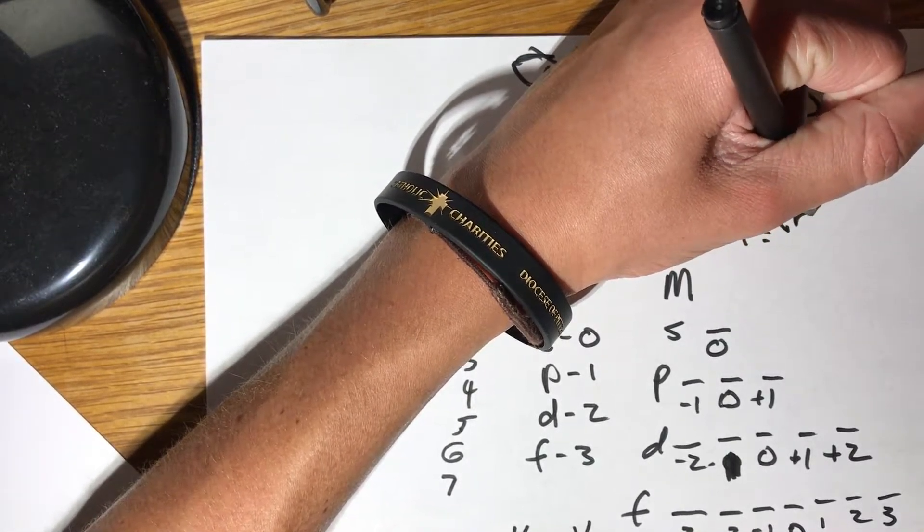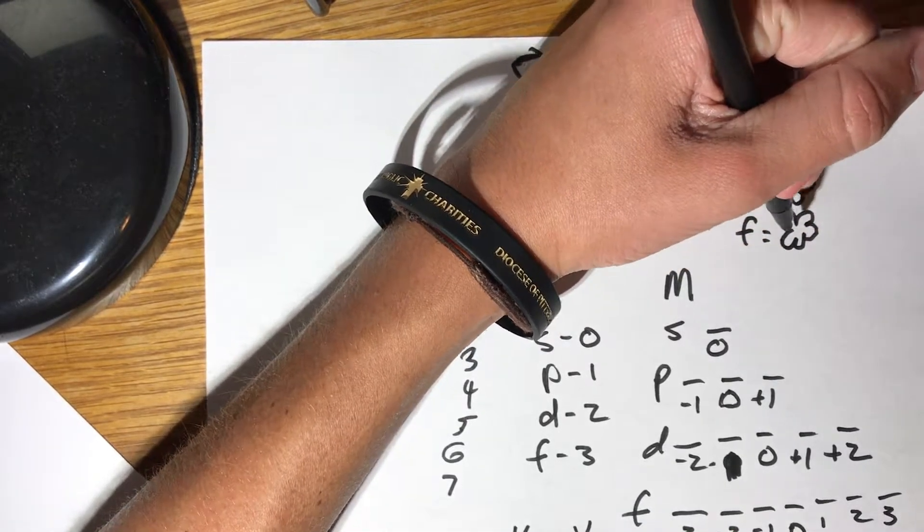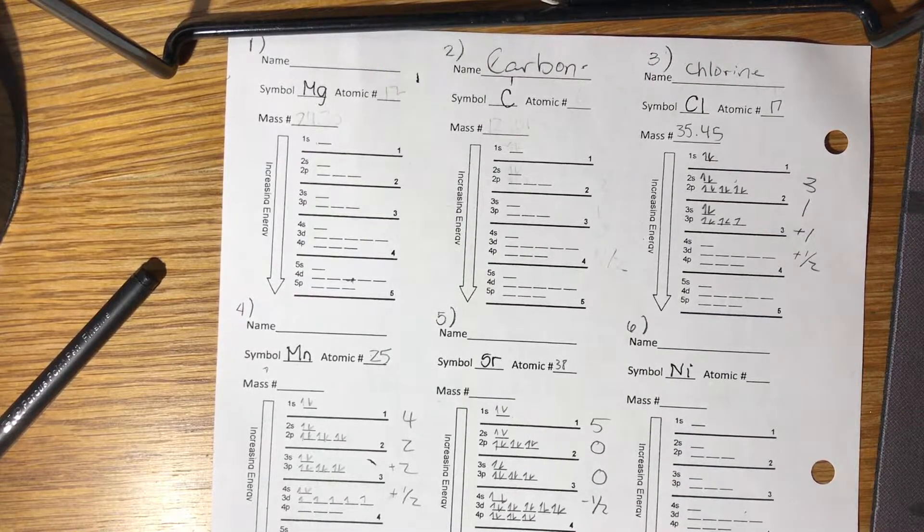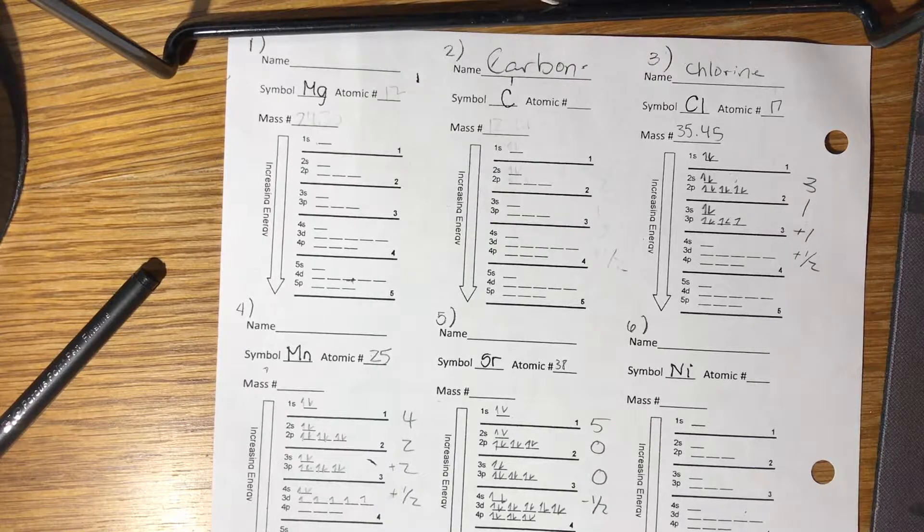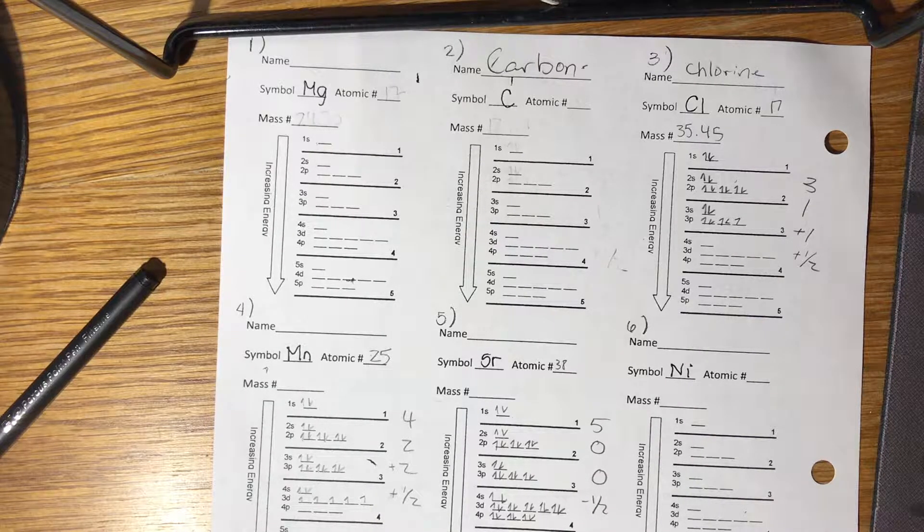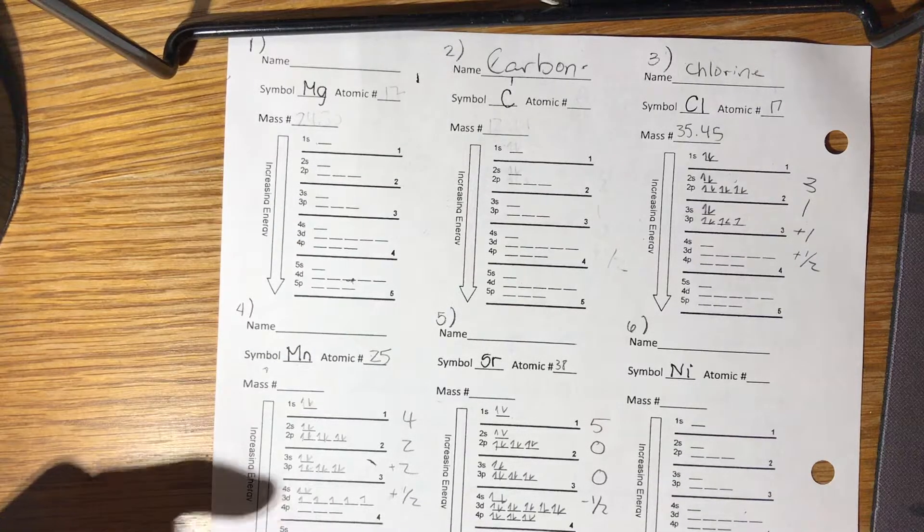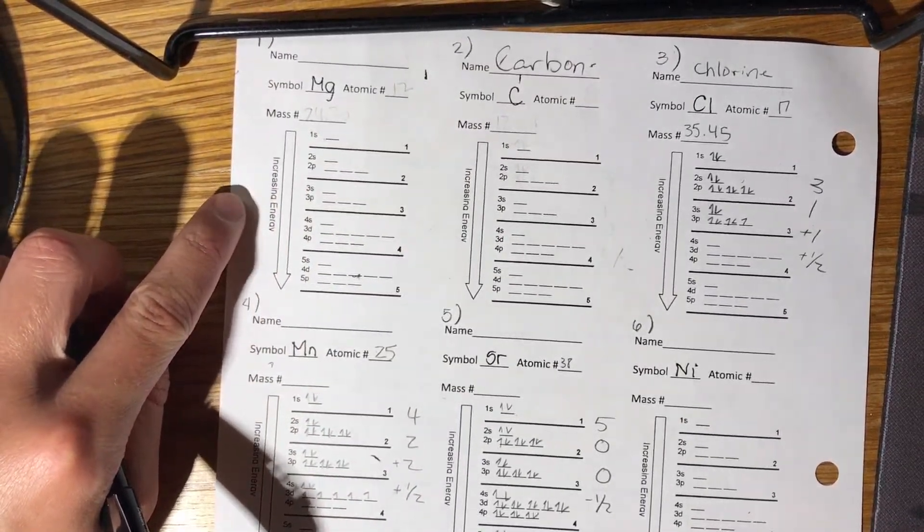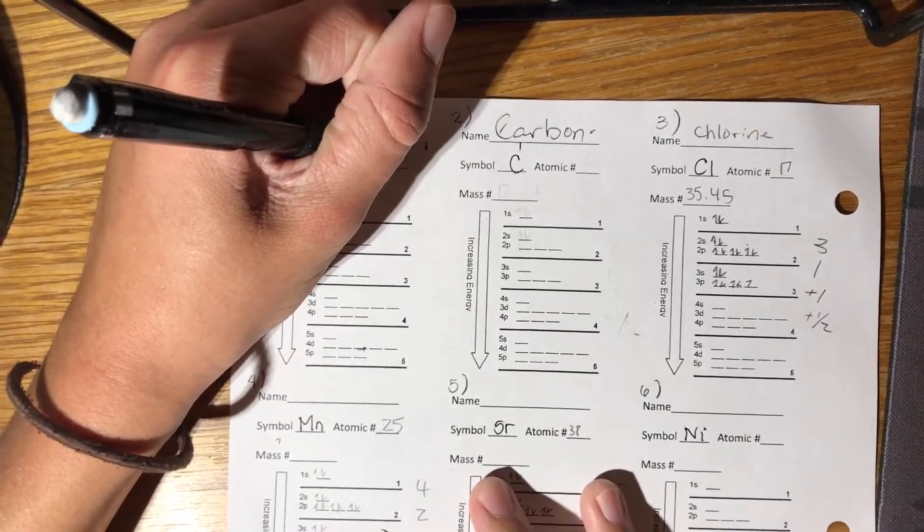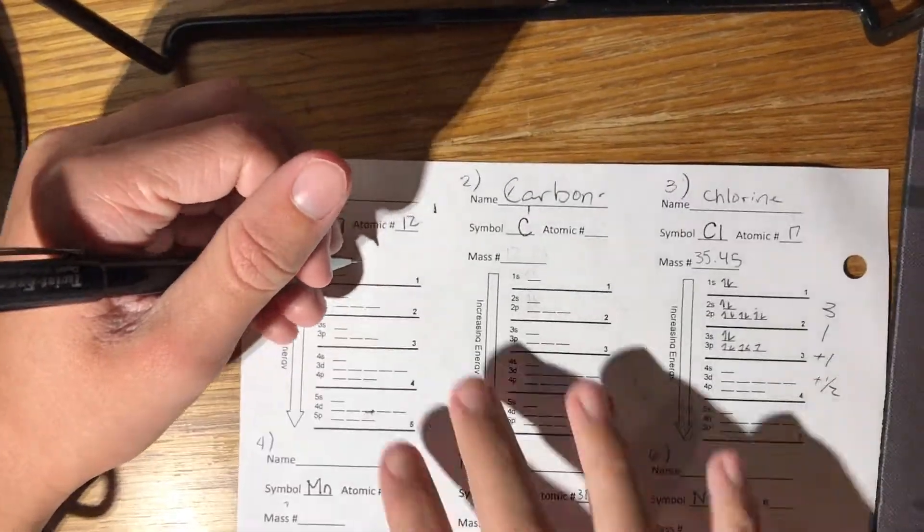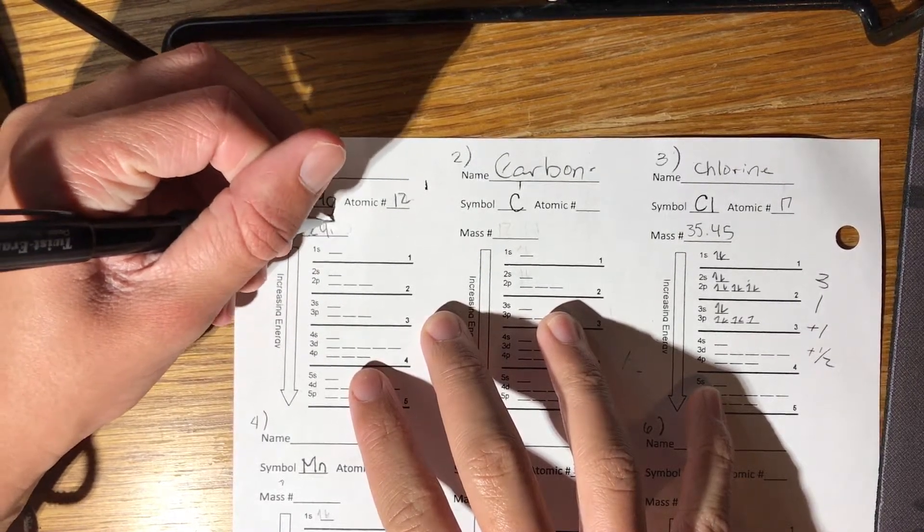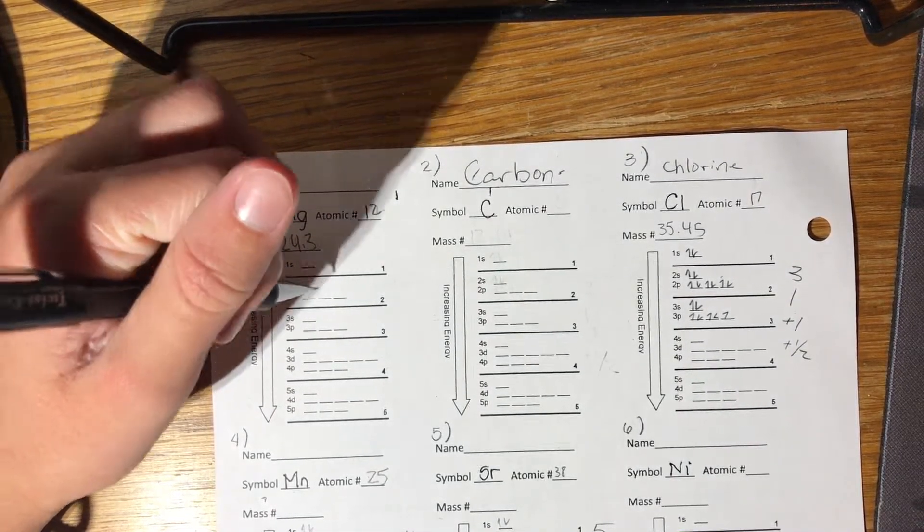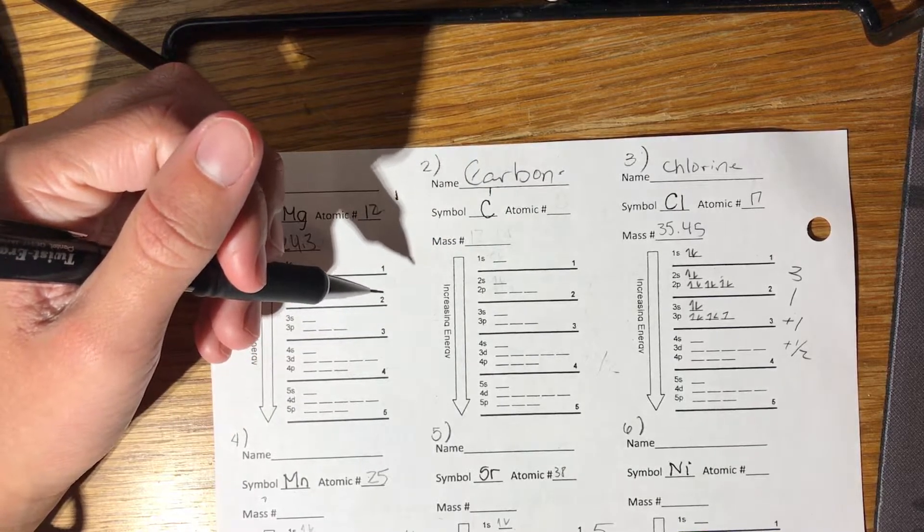Here are two example problems. Get the periodic table out and pause now. You have to know what magnesium's atomic number is and what its mass is, which from the periodic table we know is 12 and 24.3.